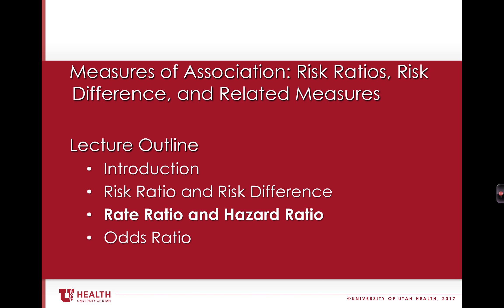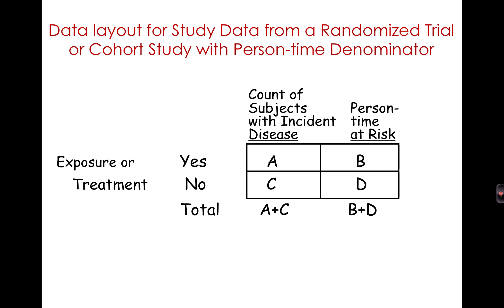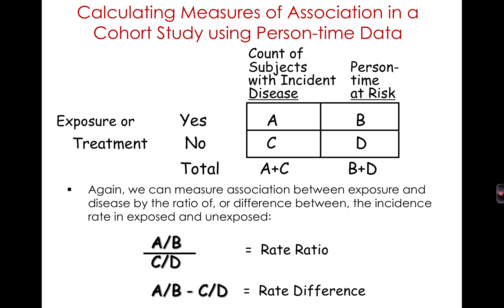Moving on to data with a person-time denominator, the measures of association will be the rate ratio or hazard ratio. The data layout for study data from a randomized trial or cohort study with a person-time denominator is again a two-by-two table. The left column is the same — count of subjects with incident disease. The right column has changed: it is now a person-time denominator representing the sum of person-time at risk from the exposed and unexposed groups, becoming B and D. The incidence is A over B in the exposed and C over D in the unexposed — but those incidences are now rates instead of risks. We can measure the association by the ratio or difference between incidence rates: the rate ratio or rate difference.